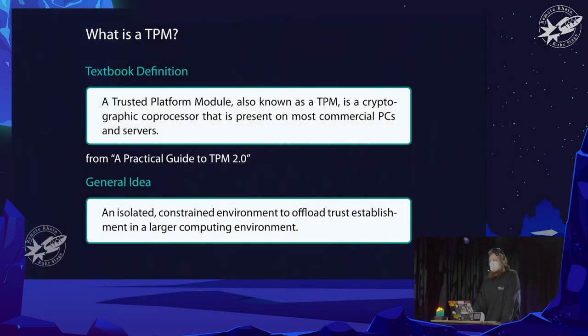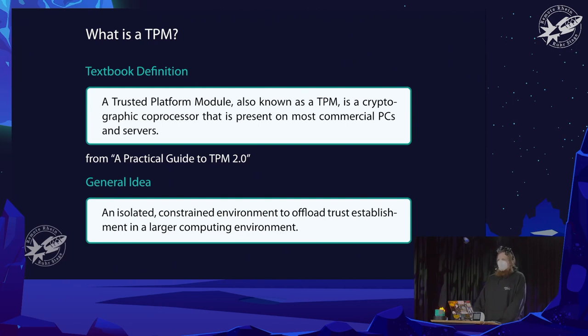I don't want to go too much into detail, but be aware that everything we're talking about here is not easily defined. So I try to find a more general description: the general idea of a TPM is to have an isolated or constrained environment to offload trust establishment in a larger computing environment. We're talking about isolation and constraints — keep that in mind for everything coming next.